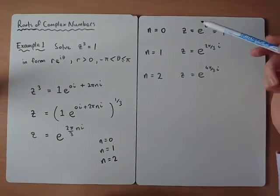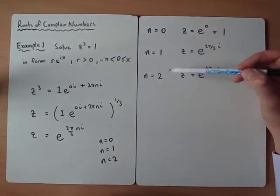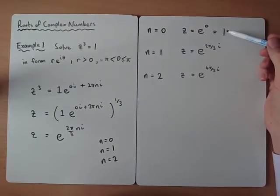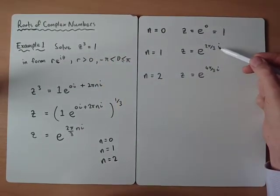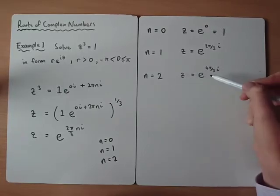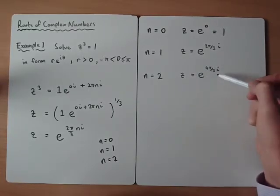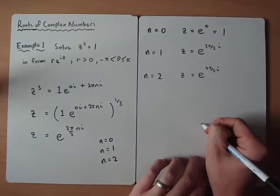So if we look, if we sub in 0, 1 and 2, obviously we get the number 1, which we already knew from the beginning, it was one of our roots. And we get e to 2π over 3i. And if you do sub 2 in, it's not a disaster, you get e to 4π over 3i. And if you visualize what's going on here,